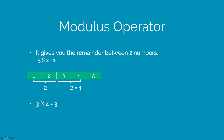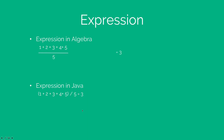Now if you take this number, 3 % 4, notice that 4 will go 0 times in 3, giving you the remainder 3, which is why you see 3 as the answer here. So similar to Algebra, you have expressions in Java as well, except that you will be putting them in parentheses and you will be evaluating them.